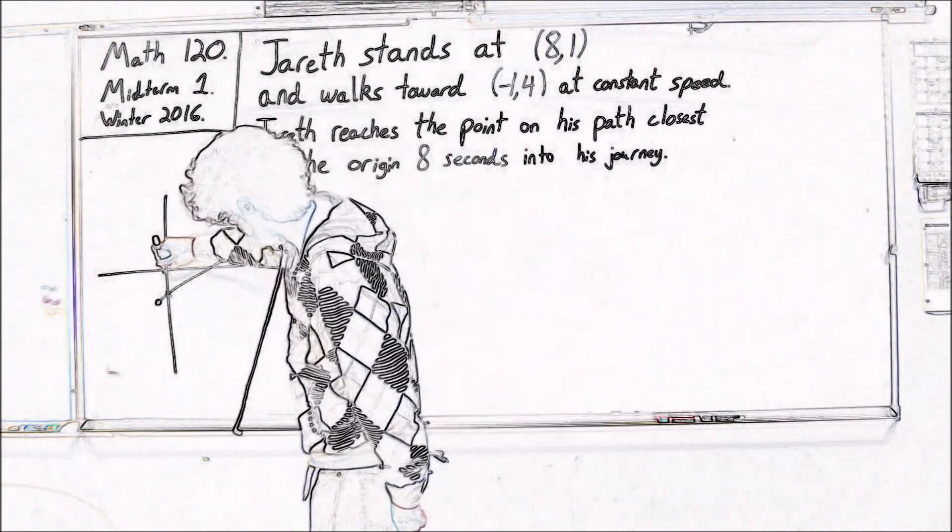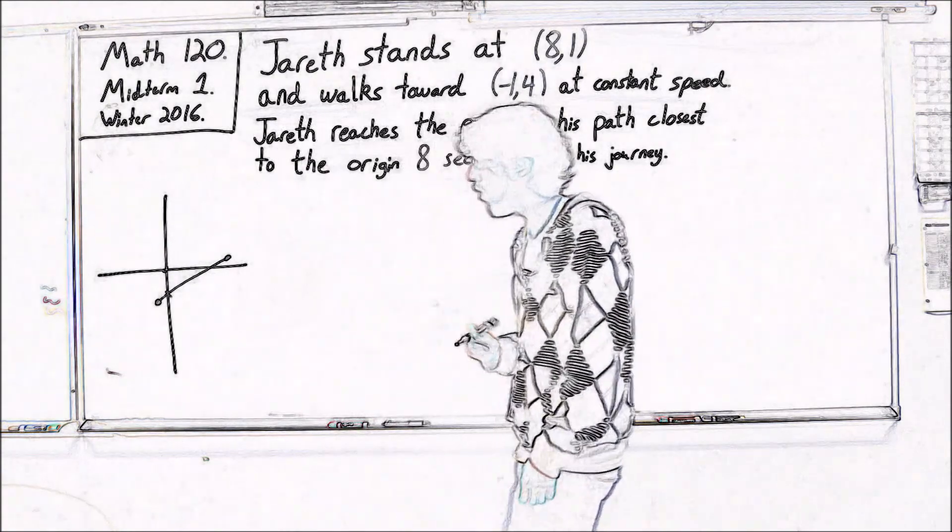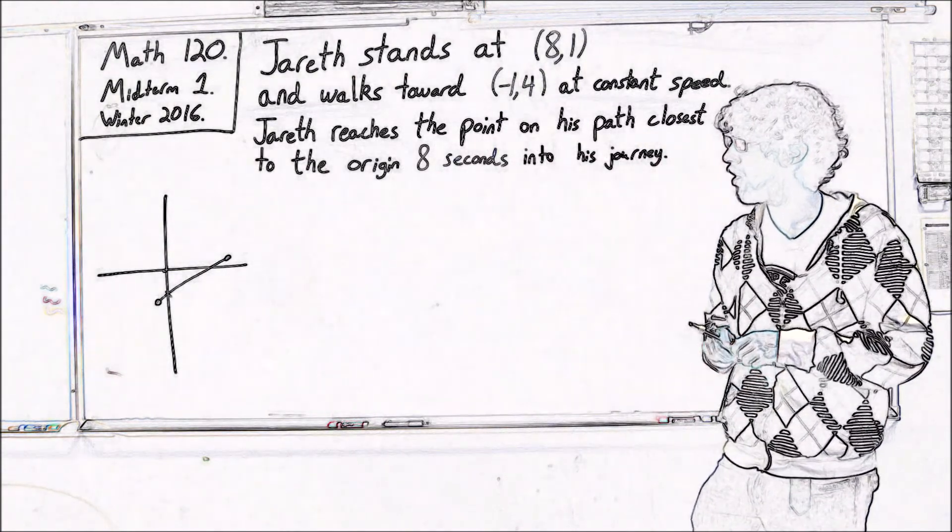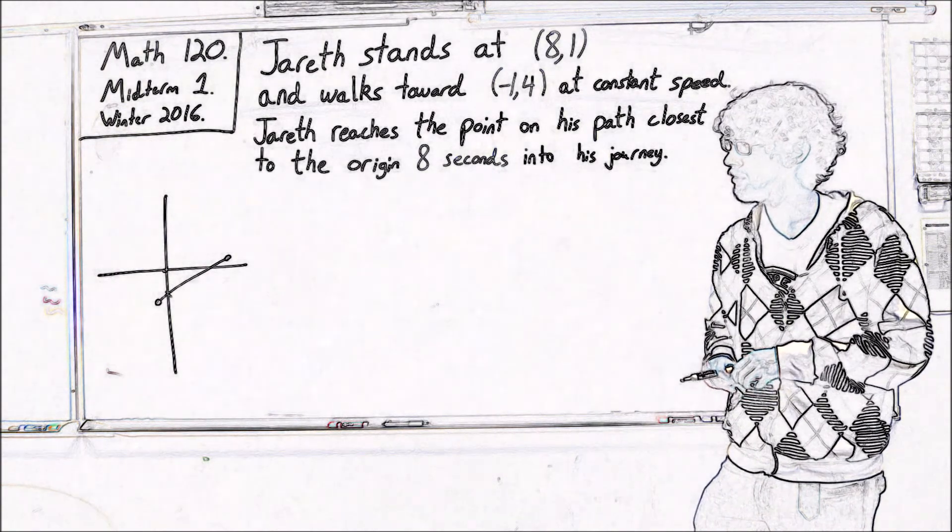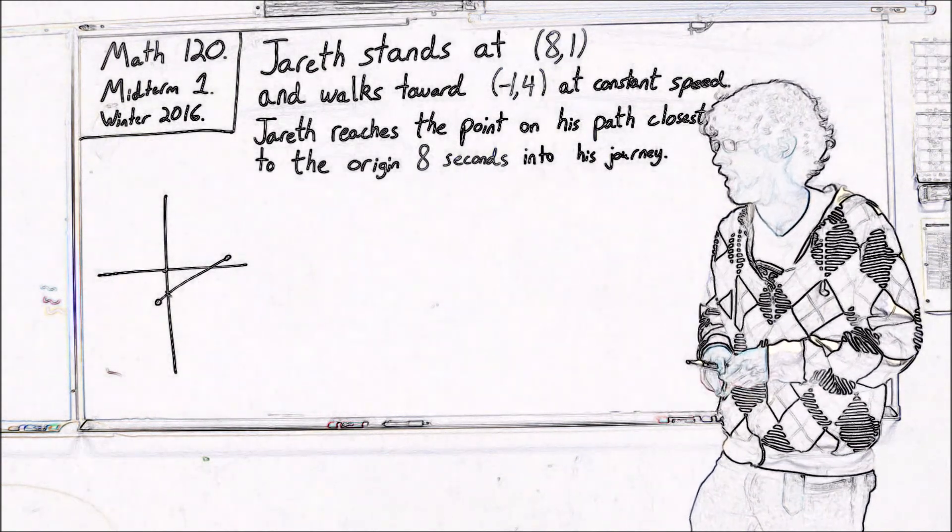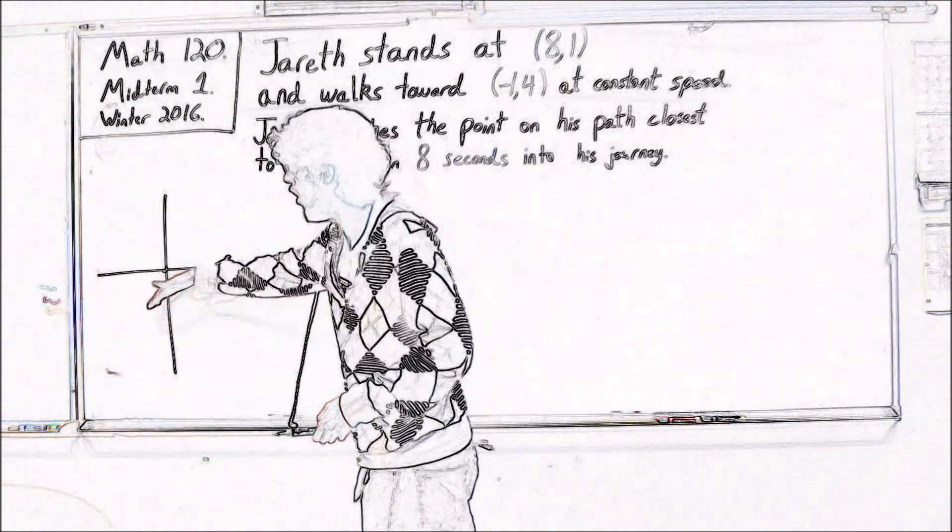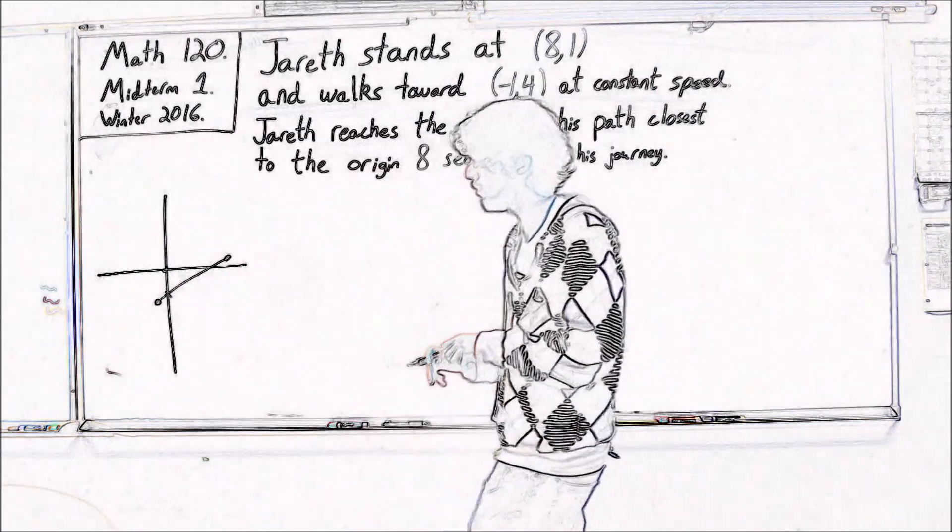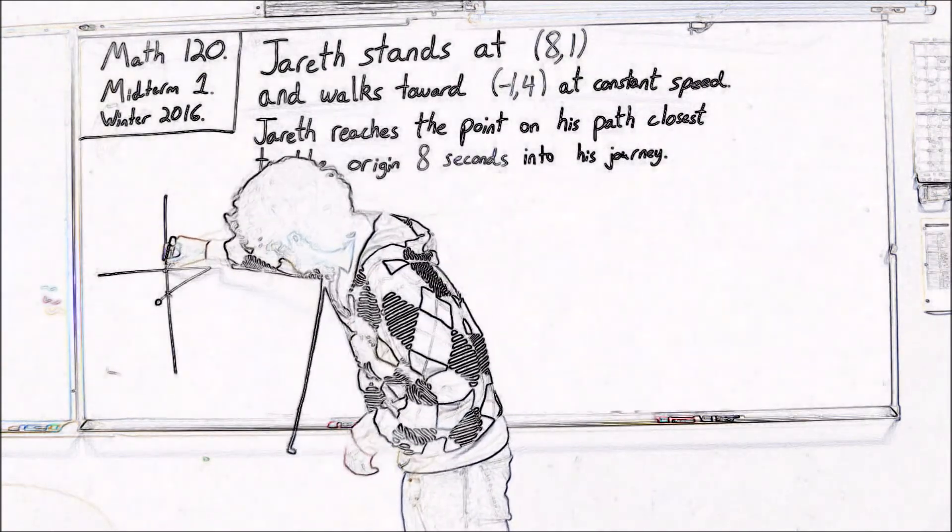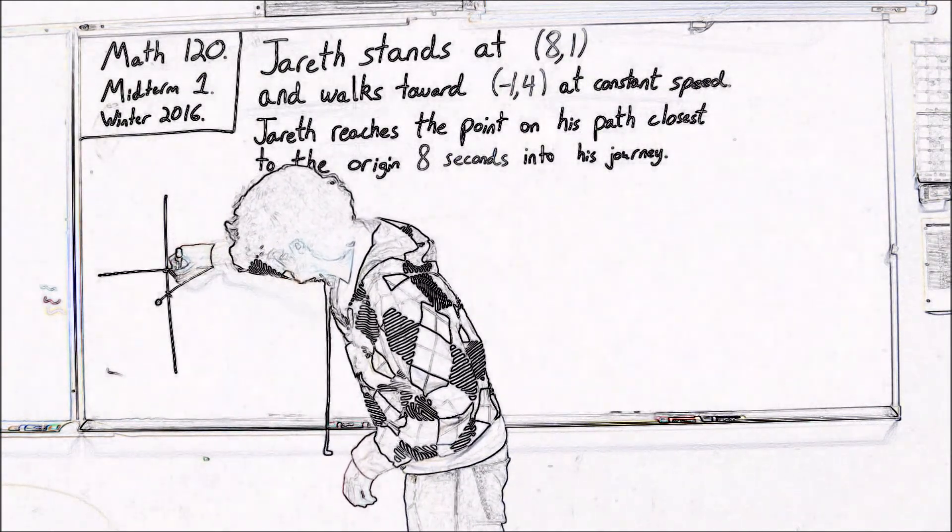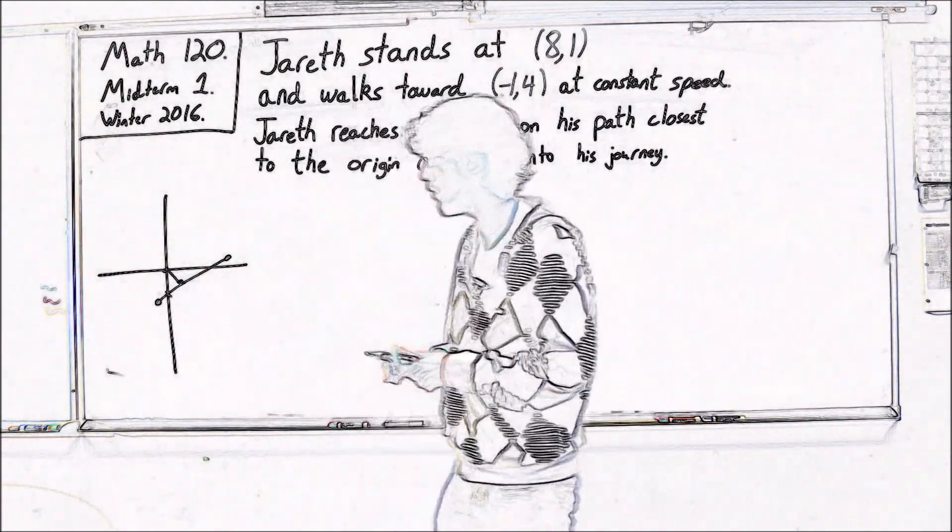If you were at the origin and you wanted to get to some point on this line, what path would you take in order to get to somewhere along this line? Well, if you think of this as a wall and you were somewhere in a room, the fastest path to get to a wall is in such a way that you'll hit the wall at a perpendicular.